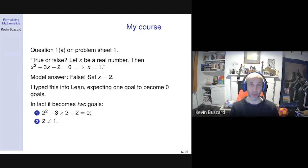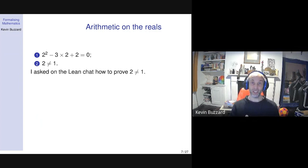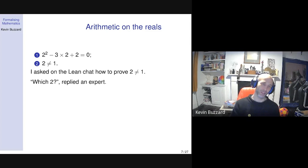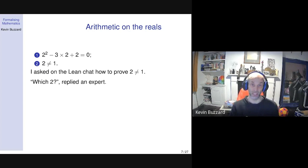All of a sudden I realized I didn't quite know what I was doing. I'm sitting in Berkeley on my laptop, stuck. So I asked on the Lean chat — there's a small community in 2017 — I asked how to prove 2 is not equal to 1. I get the response: 'Which 2?' To a mathematician, you give this talk in a maths department and you get a laugh, because everyone knows there's only one 2. But an expert replied, and I now know enough about type theory to know there are different 2s — the natural number 2 is not the same as the real number 2, because they have different types.